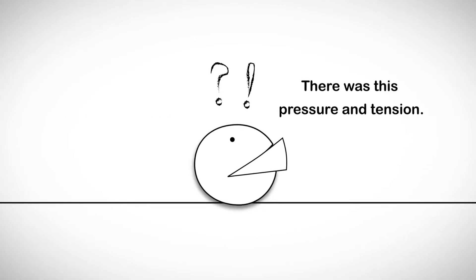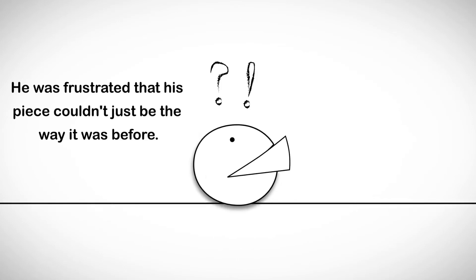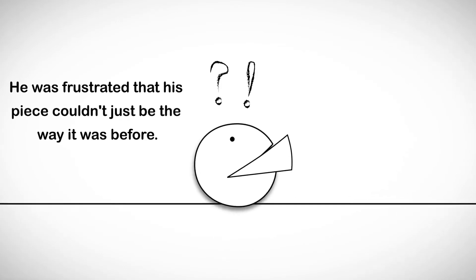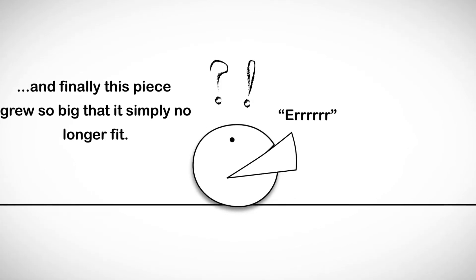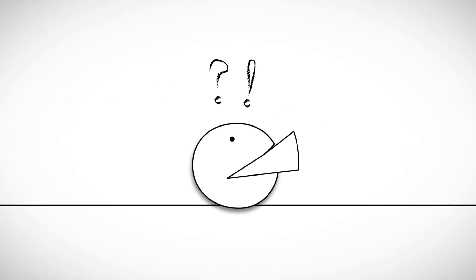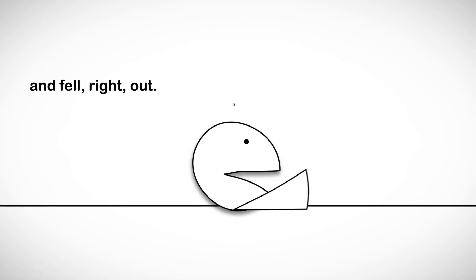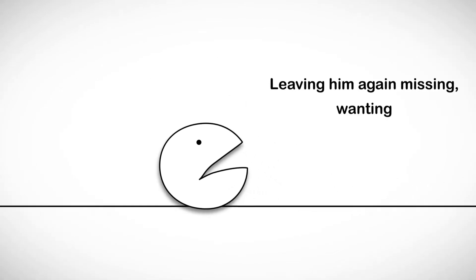He was frustrated that his piece couldn't just be the way it was before. And finally, this piece grew so big that it simply no longer fit and fell right out, leaving him again missing, wanting, and utterly unable to roll.